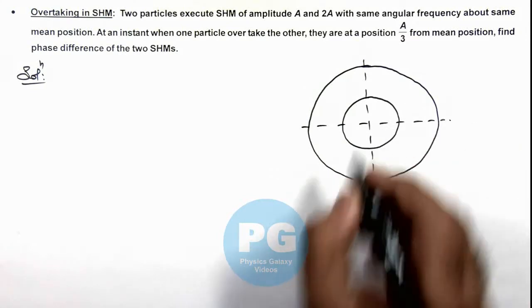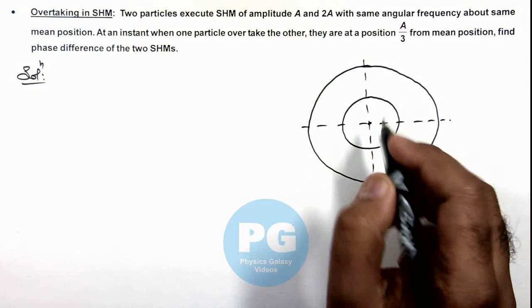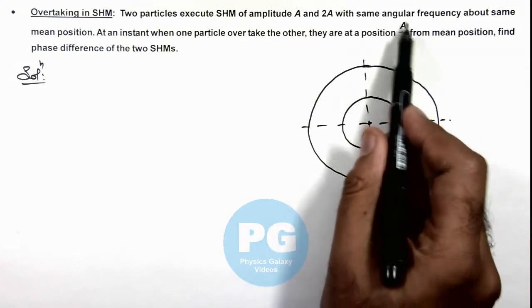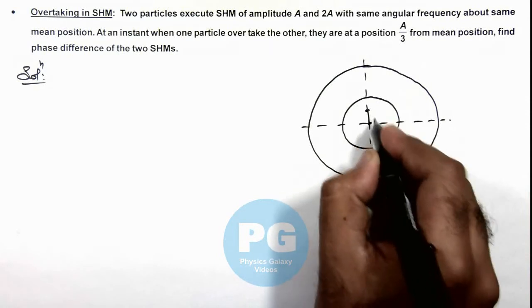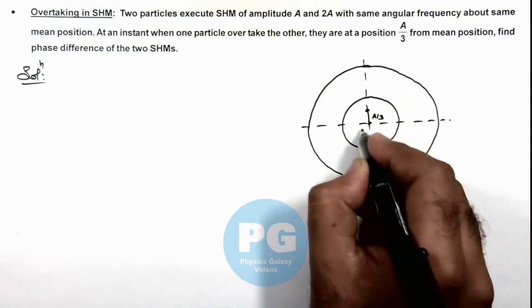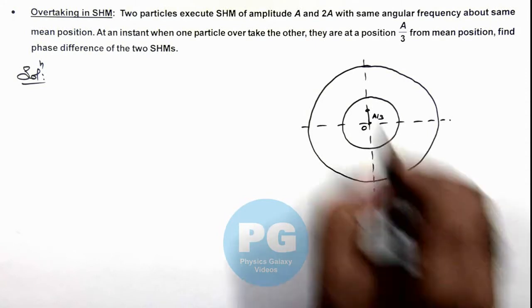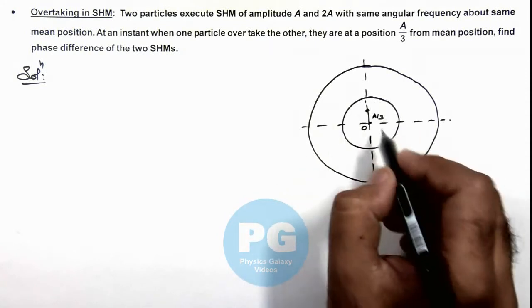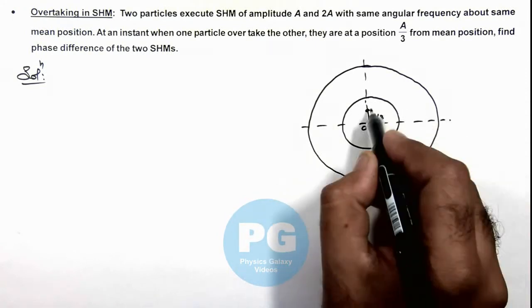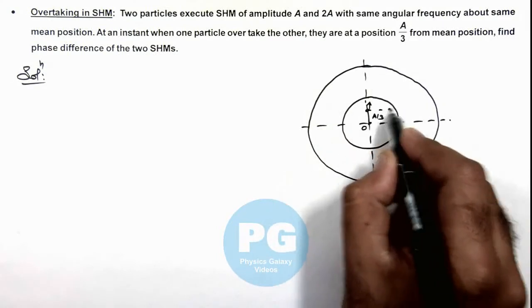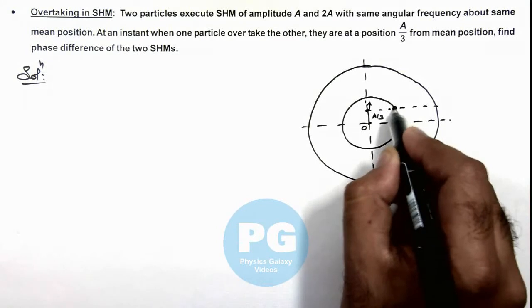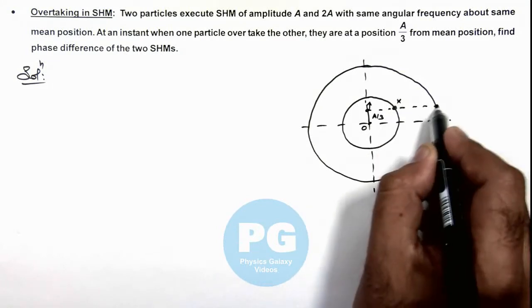Now in this situation we are given that at the point of overtaking, they are at a position A/3, say if this is the position at a distance A/3 from mean position. So overtaking is in same direction for both the particles. Say the particles are moving away from mean position. This particle X and this particle Y.